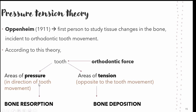In the pressure area, there is decreased cell replication and vascular constriction, all leading to bone resorption. In the areas of tension, there is stimulation produced by the stretching of the periodontal ligament fiber bundles, so there is increased cell replication. Hence, in tension areas — opposite to the tooth movement — bone deposition occurs. In the pressure-tension theory, two key terminologies are frontal bone resorption and undermining bone resorption.